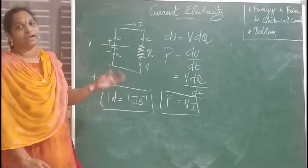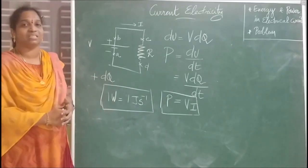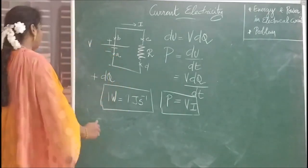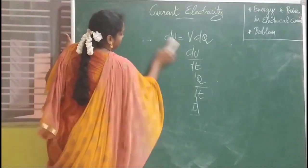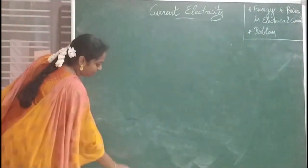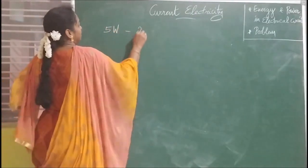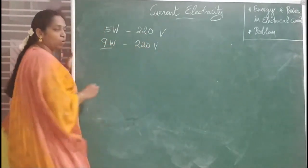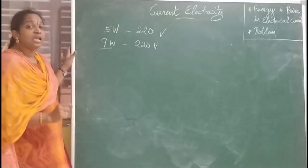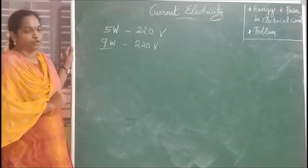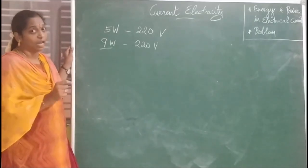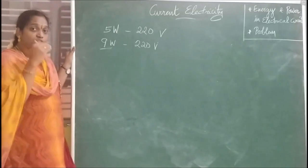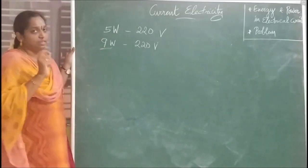If you buy a bulb or any electrical appliance, you can see the voltage rating on the device. For example, a 5-watt bulb or a 9-watt bulb may be rated at 220 volts. This represents the RMS voltage. If the voltage drawn across the bulb is greater than this rated value, the bulb will fuse.